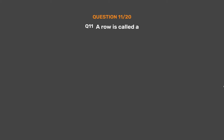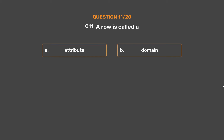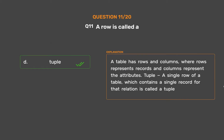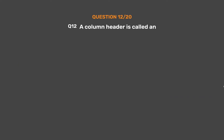Question number 11. A row is called: Option A: Attribute. Option B: Domain. Option C: Relation. Option D: Tuple. The correct answer is Option D: Tuple. A table has rows and columns, where rows represent records and columns represent the attributes. A tuple is a single row of a table which contains a single record for that relation.